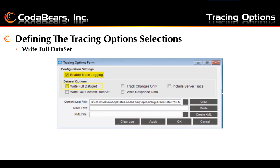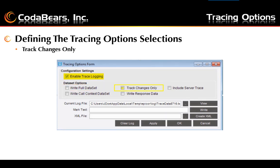Next we highlight the write full dataset option. Check this box to write the full dataset if you would like to see the dataset being passed from the client to the server; otherwise the dataset contents will not be included in the trace log. The next option is track changes only. Check this checkbox to see only changes made to the dataset. Any columns that have changes made will be shown in the log instead of the full dataset.